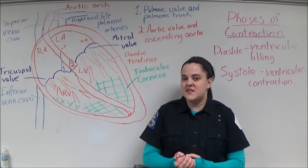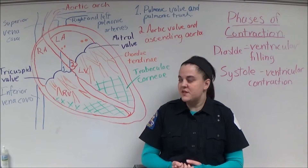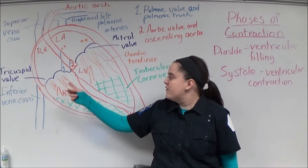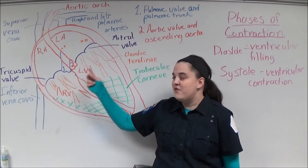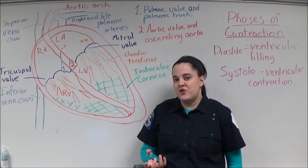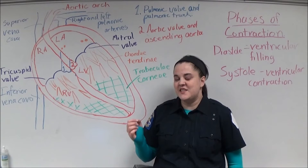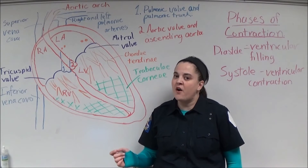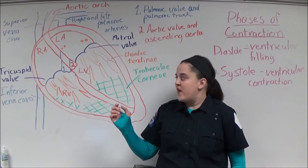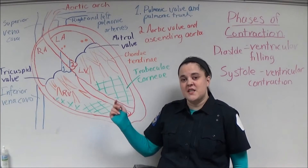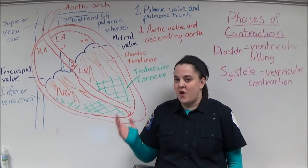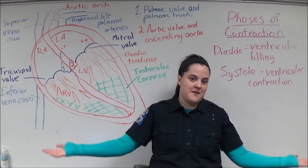The heart has four distinct chambers: the right atrium, the left atrium, the right ventricle, and the left ventricle. When the right ventricle contracts, it sends deoxygenated blood from the heart out to the lungs. When the left ventricle contracts, it sends blood from the heart out to the rest of the body.